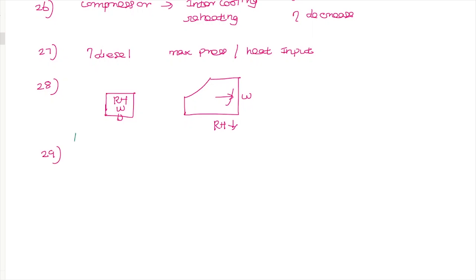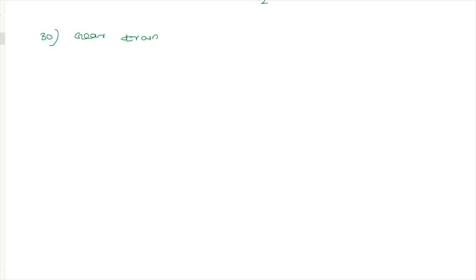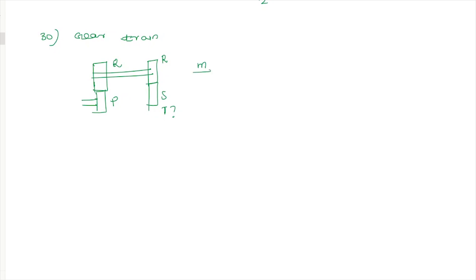In Theory of Machines, the number of instantaneous centers is I = n(n−1)/2. The next question is about reverse gear trains with gear sets PQ and RS. The module equation gives: module = 2 / (t1 + t2) for tp + tq, and module equals t/s. This is the answer for that configuration.